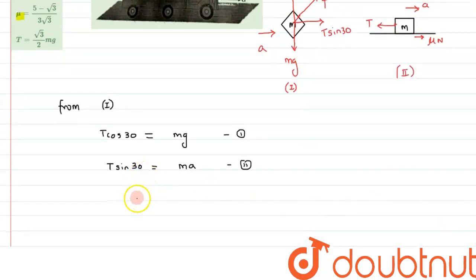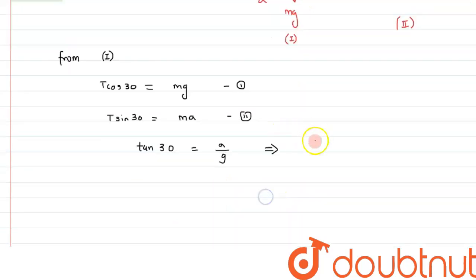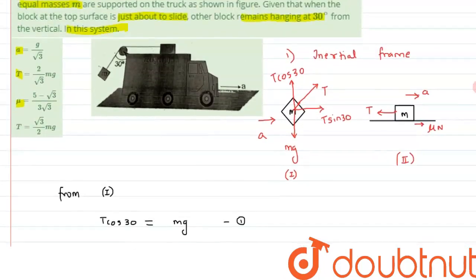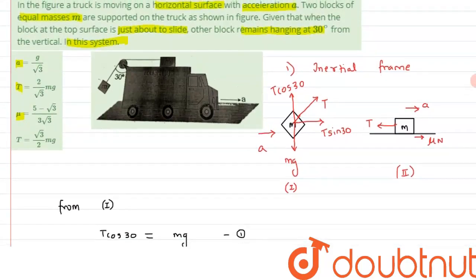By using the value of tan 30, we are getting tan 30 and that is equals to a by g. From here, tan 30 value is nothing but it is 1 by root 3. And here it is a by g. So from here we can say the value of a would be nothing but it can be written as g by root 3 meter per second square. So this is what the value we are getting for the acceleration.